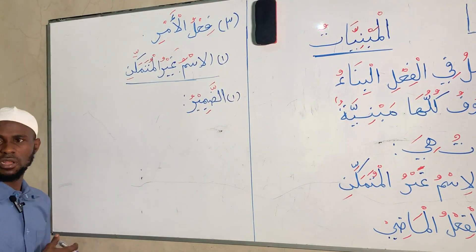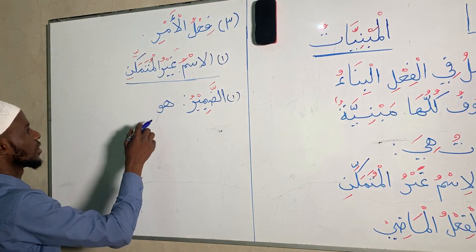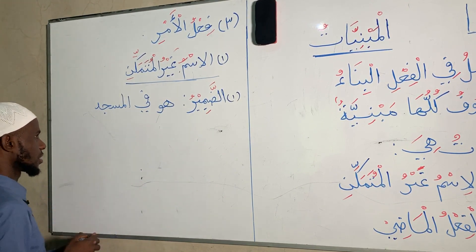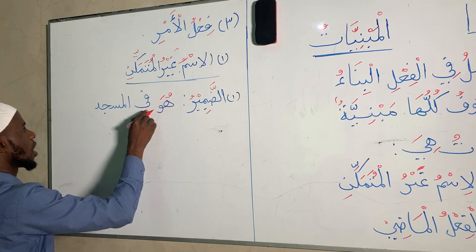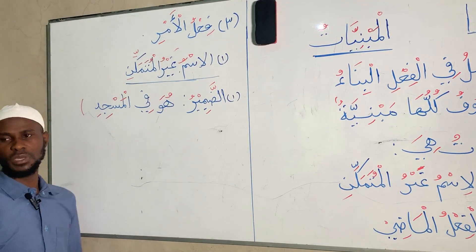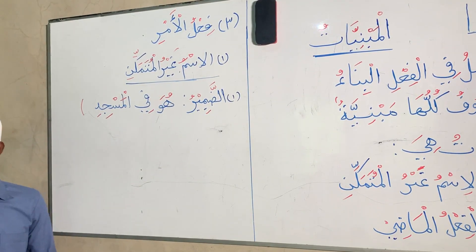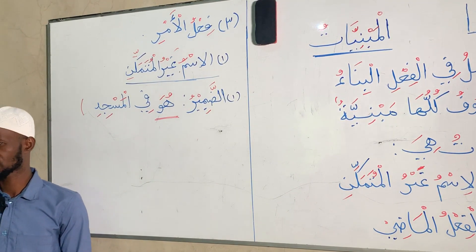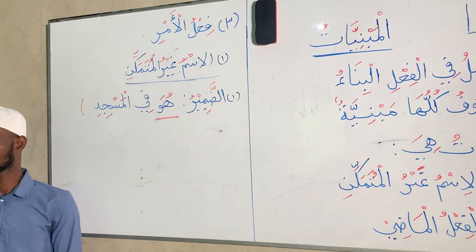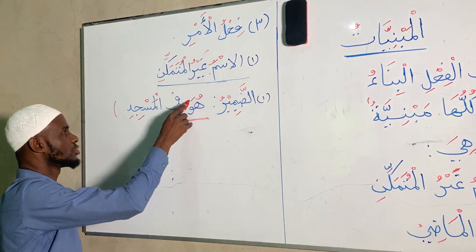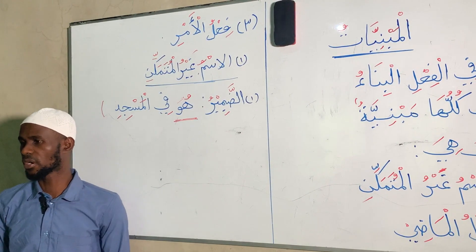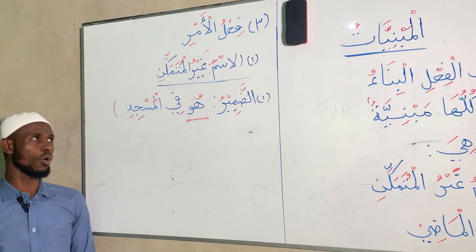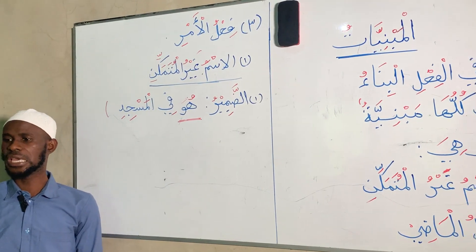For example, you have a lot of pronouns; you have Huwa. You say: Huwa fil Masjidi — he is in the mosque. The 'he' there is the pronoun, and you can see that the end has Fathah. It is the Fathah that is stagnant. That is why we say Mabniyyun 'ala al-Fath — it is stagnant with a constancy of Fathah, no matter the position in a sentence.